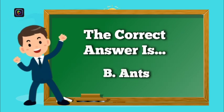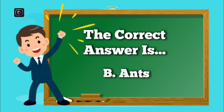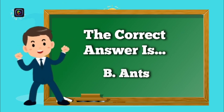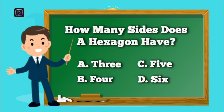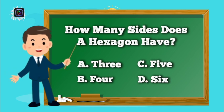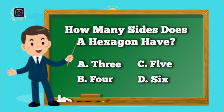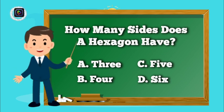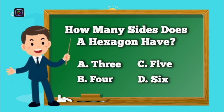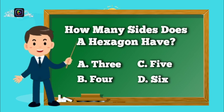The correct answer is B, Ants. Question number 9. How many sides does a hexagon have? Is it A, 3? B, 4? C, 5? Or D, 6?